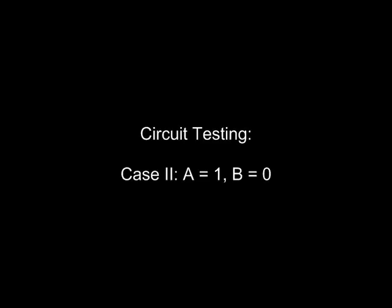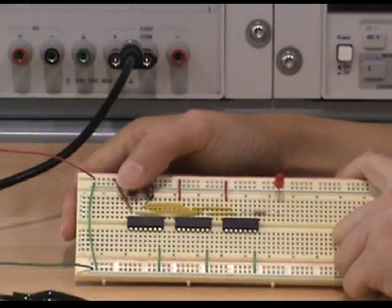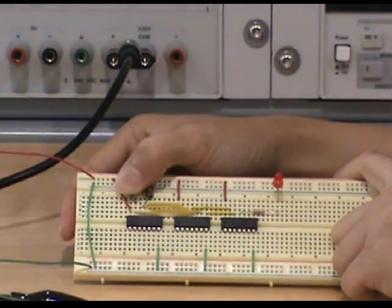In the second case, we make signal A digital 1. We press the first switch button and the LED is turned on. This is because the circuit output Y becomes 1.